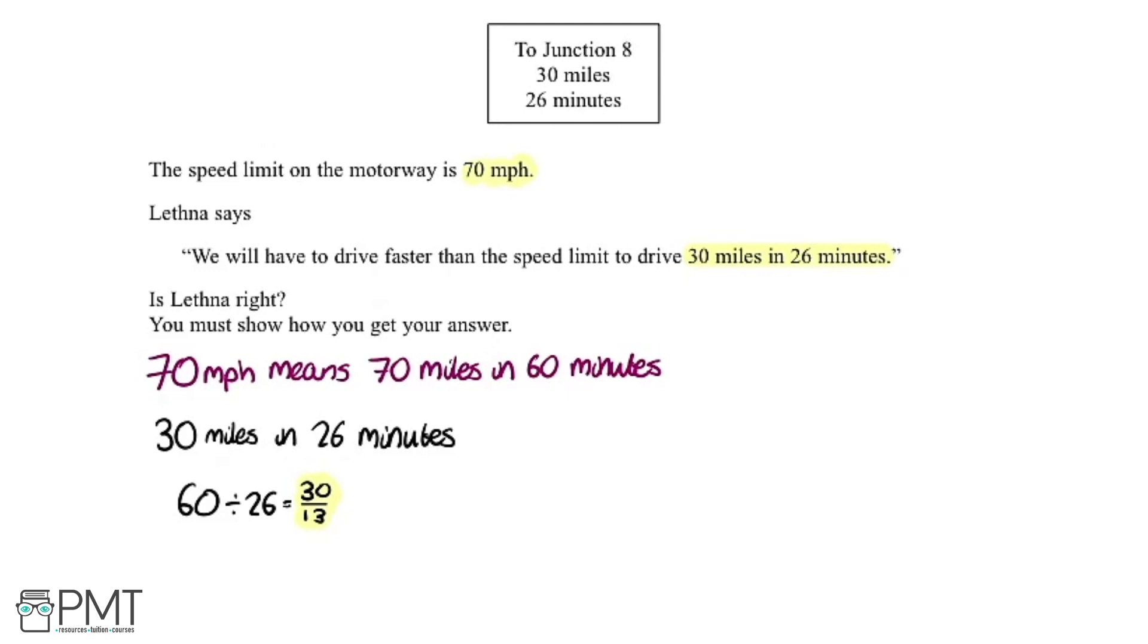But what we're going to do is get the ratio to be in 60 minutes and we're going to use our multiplier we just worked out here. So just to check that we've got it right we're going to start with our minutes first. We're going to have 26 times by our multiplier here 30 over 13 and that gets 60 as we would expect.